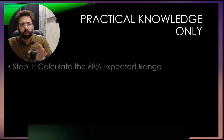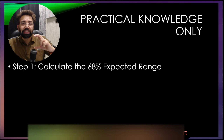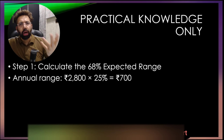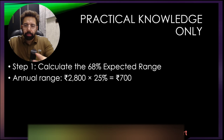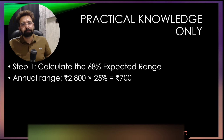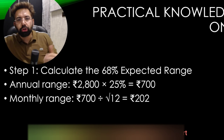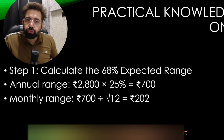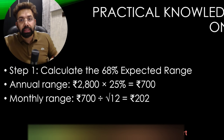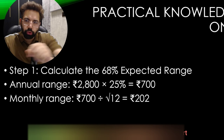Practical knowledge only — no theoretical stuff. Step 1: calculate one standard move, which is the 68% expected range. Annual range: 2800 multiplied by 25% equals 700. Simple multiplication gives you 700, which is the annual range of Reliance. But you want the monthly range. To convert, divide 700 by the square root of 12, which comes out to approximately 202.